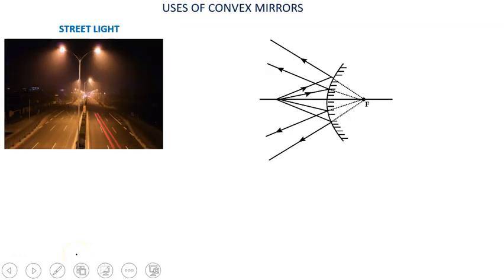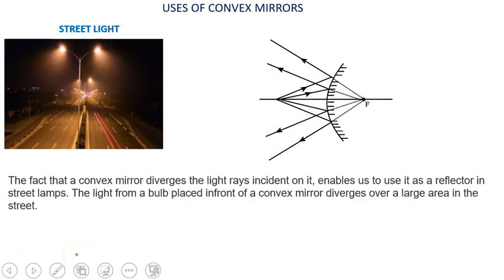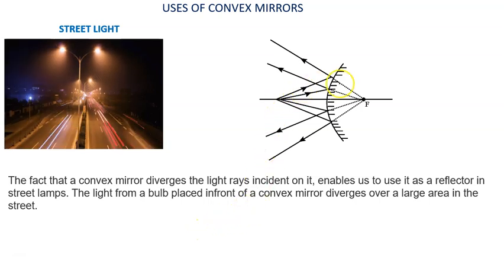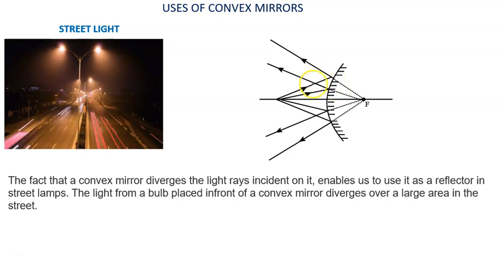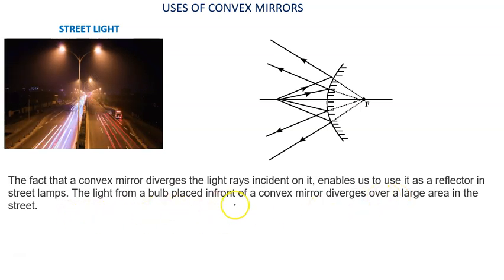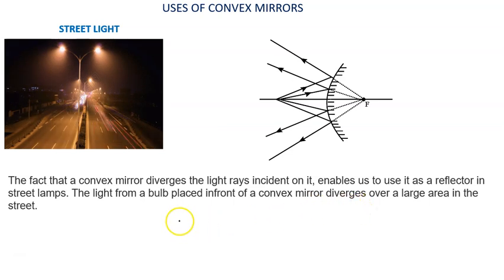Usage of convex mirror in street lights: The convex mirror diverges the light rays incident on it. Light rays falling on the convex mirror diverge, which enables us to use it as a reflector in the street lamp. The light from a bulb placed in front of the convex mirror diverges over a large area in the street.